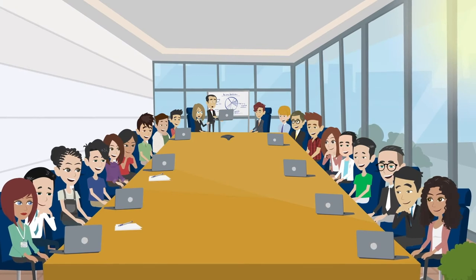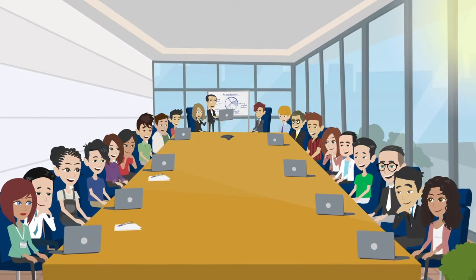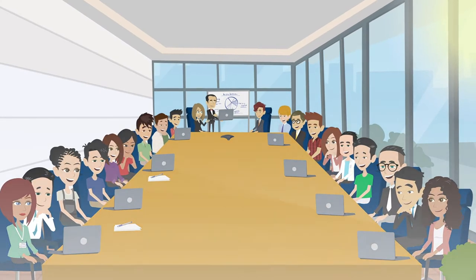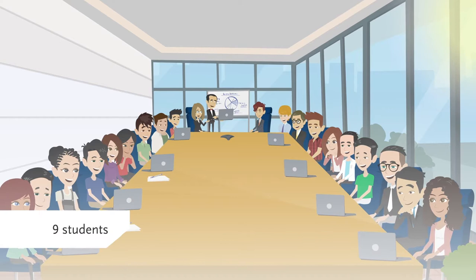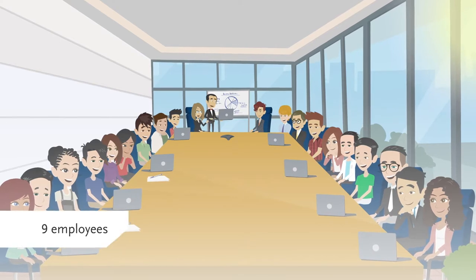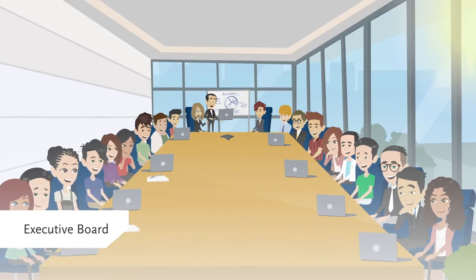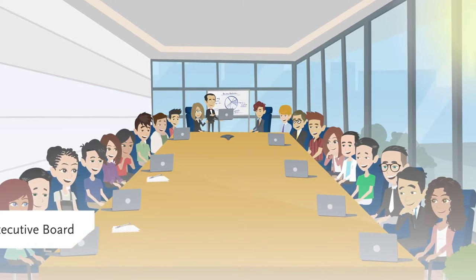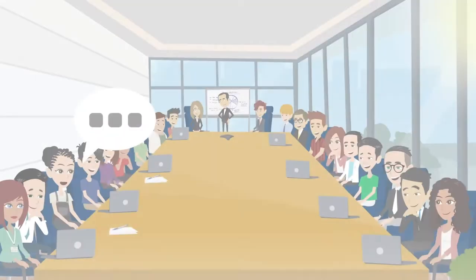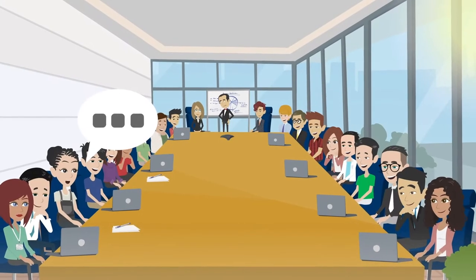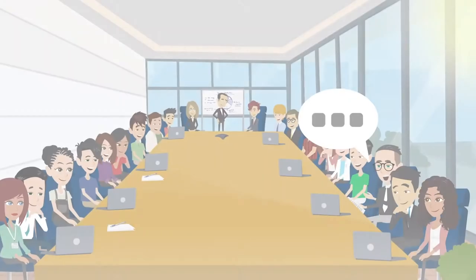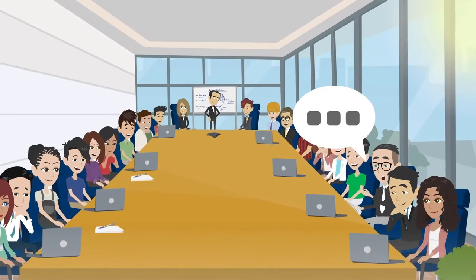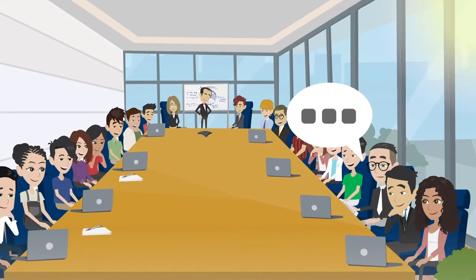The University Council is the central assembly of our university. It consists of nine students, nine employees, and the executive board. The council monitors and advises the board on university-wide policy and various affairs.